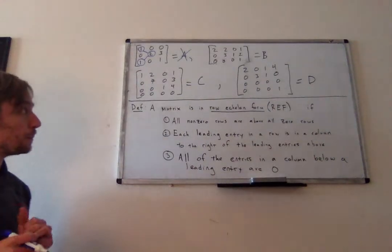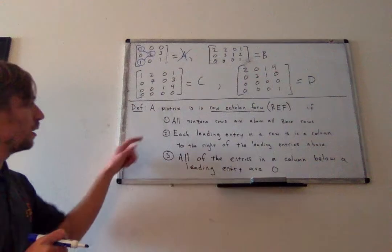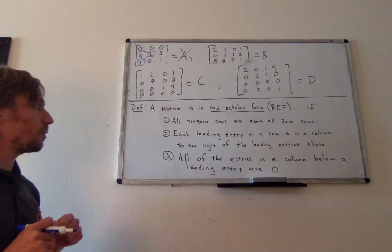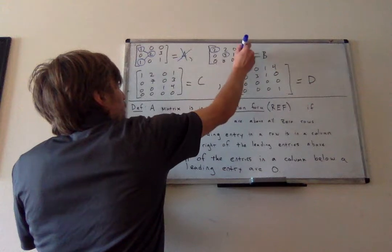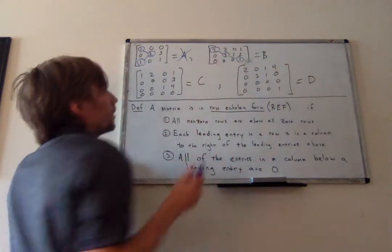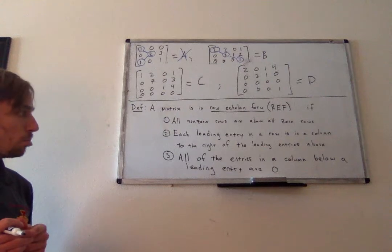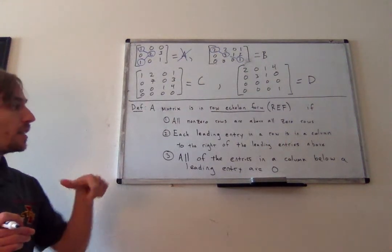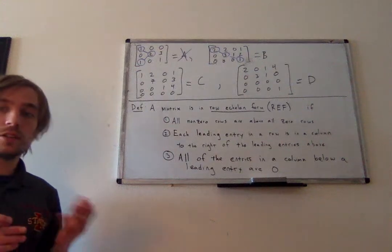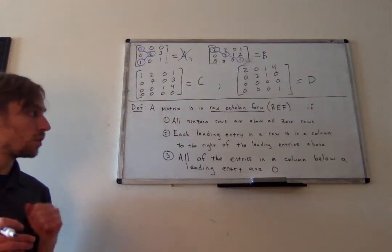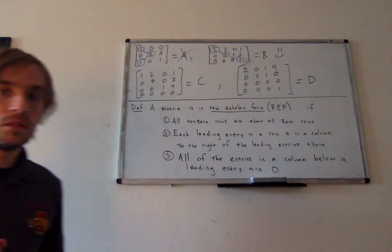Next, matrix B. B does not contain any zero rows, so property one is satisfied. Circling all the leading entries and drawing lines, they are always moving to the right, so property two is satisfied. For property three, each leading entry looks down and sees only zeros. When 2 looks down it sees two zeros, when 3 looks down it sees one zero, and the last leading entry has nothing below it. So B satisfies properties one, two, and three — B is in row echelon form.